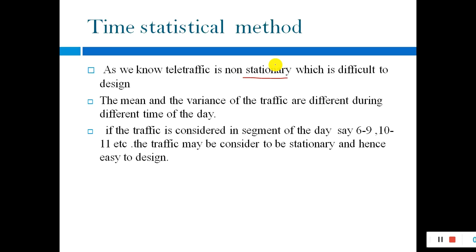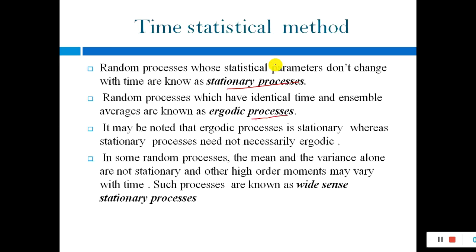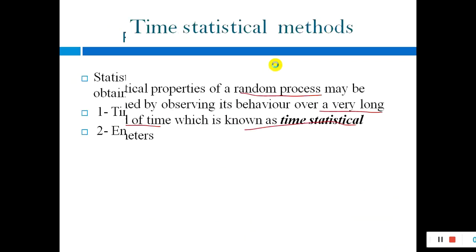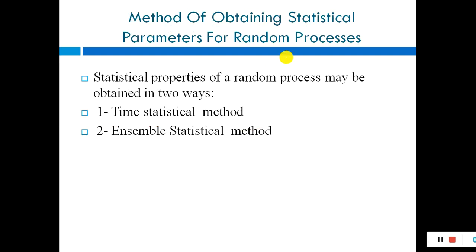So guys, it was all about today's lecture. There are two methods: time statistical and ensemble. In the time statistical method we collect statistics with respect to time by observing things over a longer period. In the ensemble statistical method, we fix the time and observe many sources to see how they behave. That was all about today's methods. Till then, take care and have a great time.